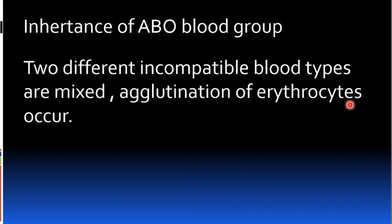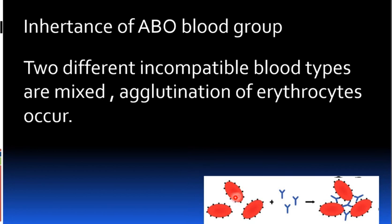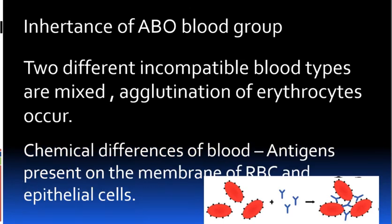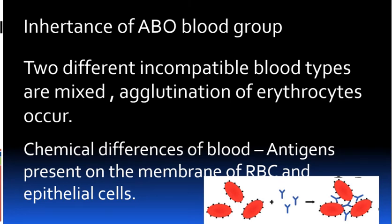Agglutination is the clumping together of blood cells. When incompatible blood types are mixed, the antibodies cause the RBCs to clump together, blocking blood flow. This process is called agglutination. On the basis of chemical differences due to the presence of antigens on the membrane of RBCs and epithelial cells, blood cells are classified.